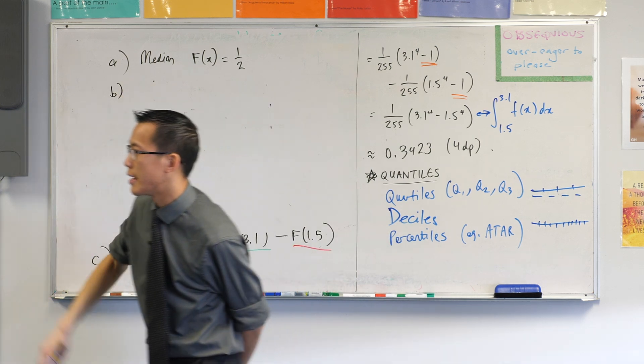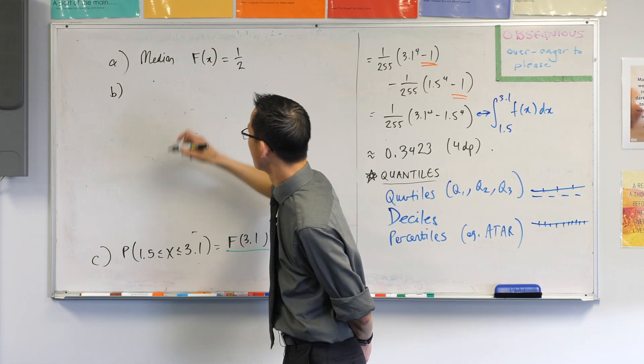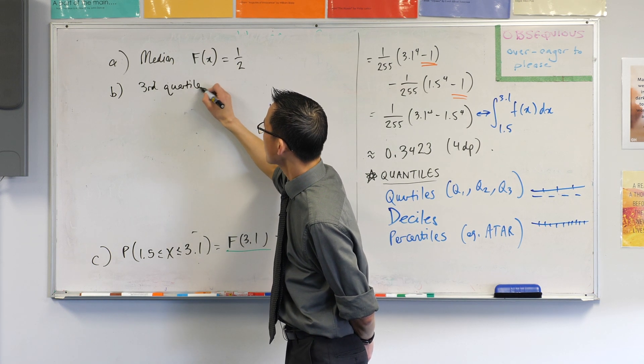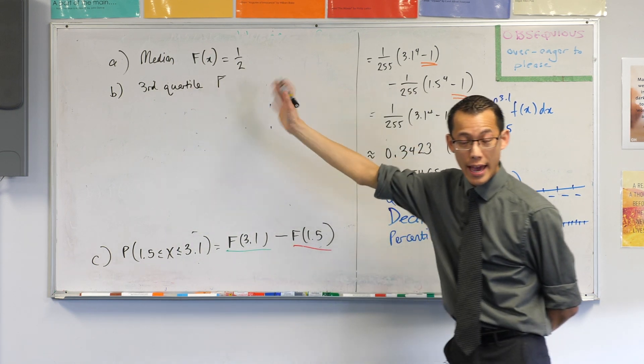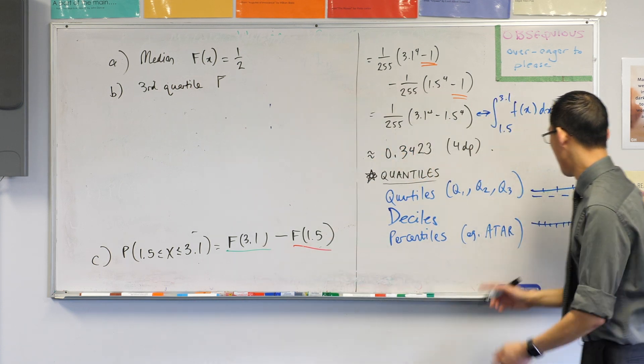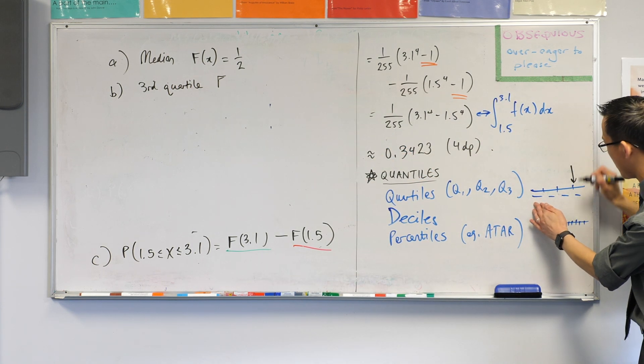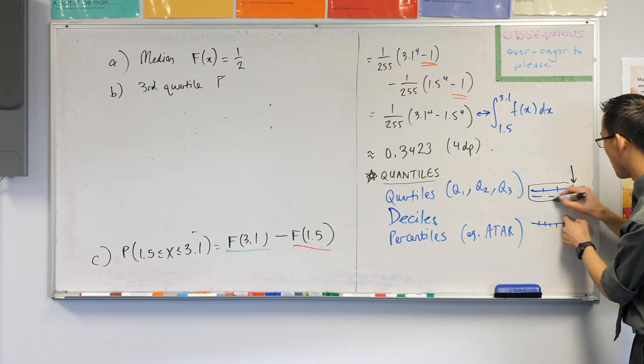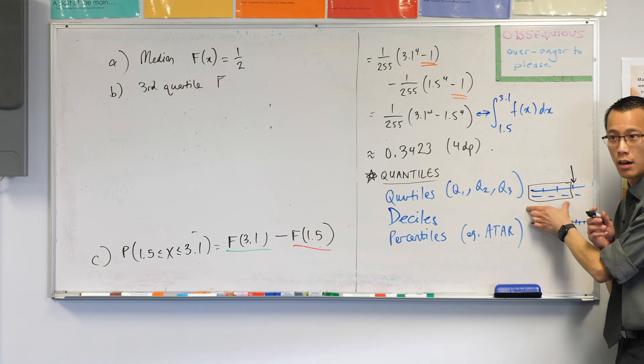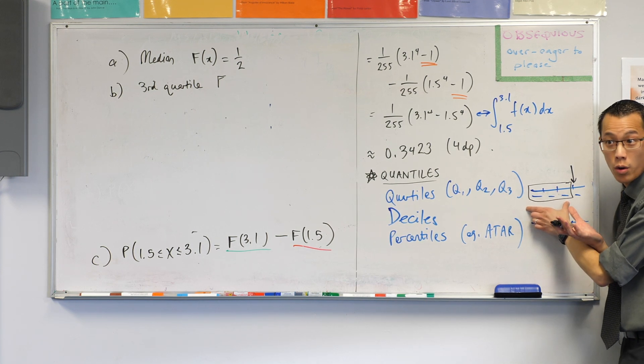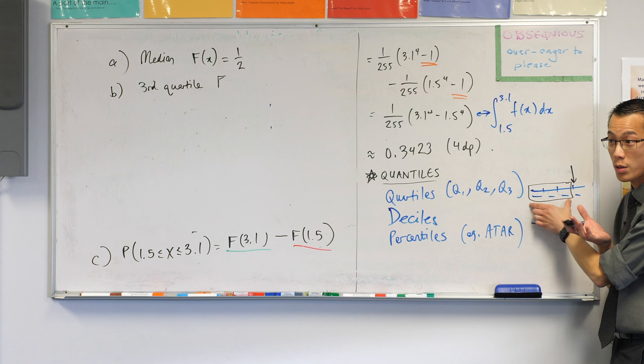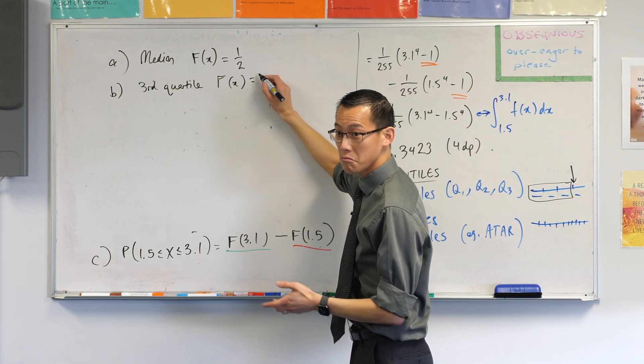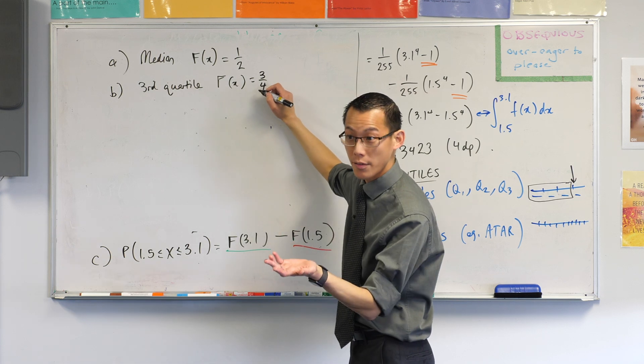What about part B? It says the third quartile. So, the third quartile, what we would do is we would say of your cumulative distribution function, the third quartile is this guy here. You start, you end. Here's your third quartile, one, two, three. So, how much of the probability should be covered over here? This is three quarters of the score. So, it's three quarters of your probability. So, therefore, F of X for this will be three over four or 0.75.